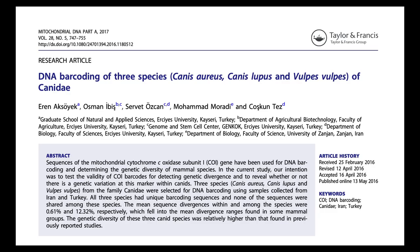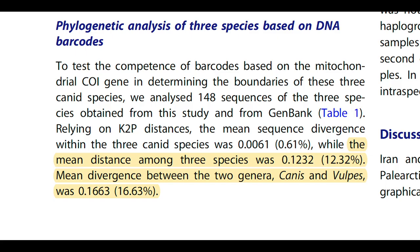Now let's fact-check this, starting with the paper about the three species of canines — wolves, jackals and foxes. The study actually makes it clear that they're quite distinct. Quote: 'The mean distance among the three species was 12.32%. Mean divergence between the two genera, Canis and Vulpes, was 16.63%.' The CO1 barcoding sequence is 648 base pairs long, so 12.32% and 16.63% translates to 80 and 108 nucleotide differences respectively. In other words, the average difference between the three species is about 80 nucleotides, and goes as high as 108 nucleotides.